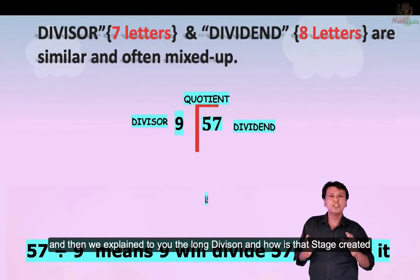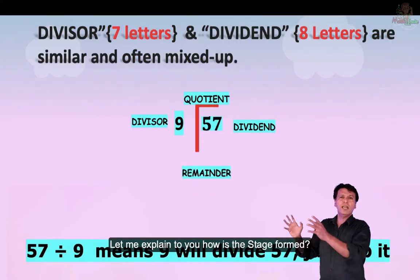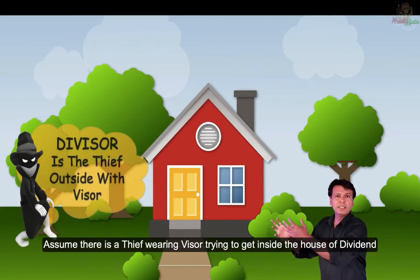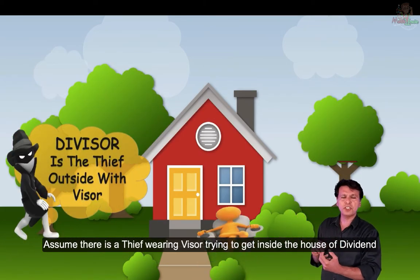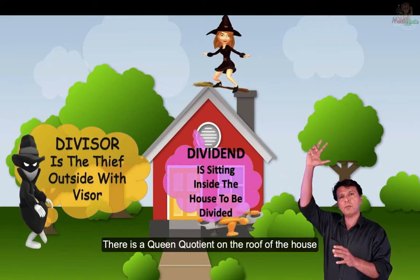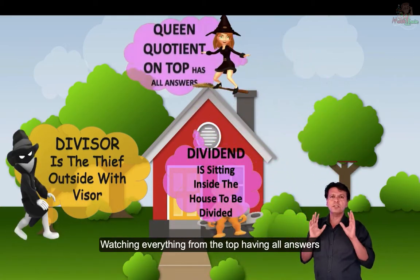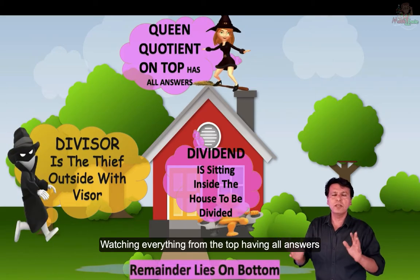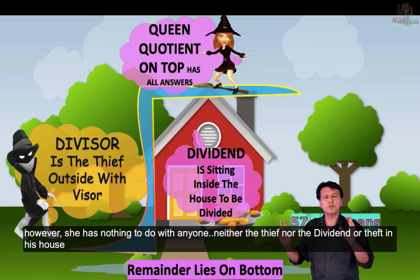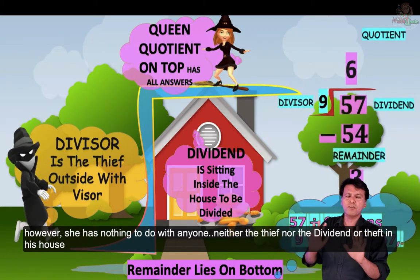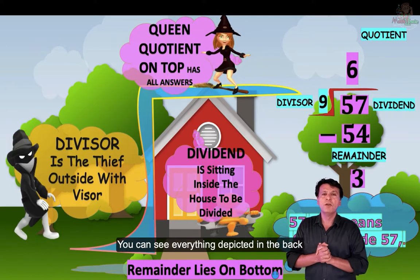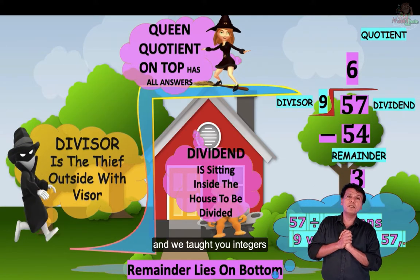You can see that the stage is made and the quotient is on the top. There are all the answers. You can find Mr. Dividend's house. You can find a divisor. You can find a remainder. So you can see the graphs, you can see everything.